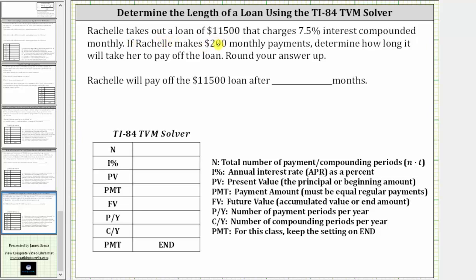Rachel takes out a loan for $11,500 that charges 7.5% interest compounded monthly. If Rachel makes $200 monthly payments, determine how long it will take for her to pay off the loan. Round your answer up.